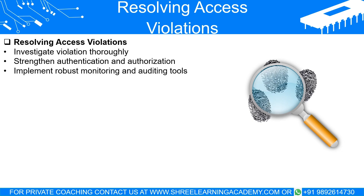Resolving Access Violations. When access violations occur, they leave traces in the system like footprints left by an intruder. These could be changes in the system files, unexpected entries in log files, or even adjustments to the system's configuration. An attentive administrator or user might spot these changes and recognize them as signs of an access violation.